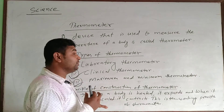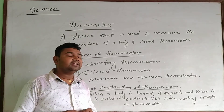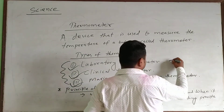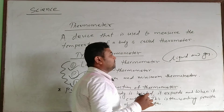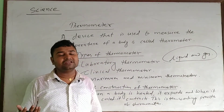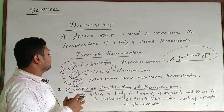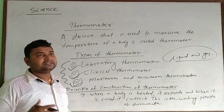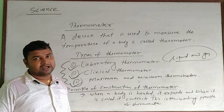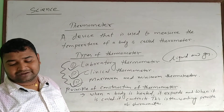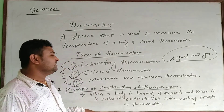In the thermometer, liquids or gases are especially used. Gases are also used in some thermometers. The working principle of the thermometer states that when it comes into contact with heat it expands, and when it comes into contact with cold it contracts. This is the working principle of the thermometer.